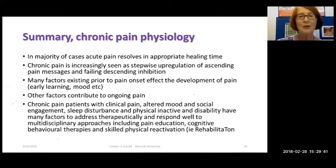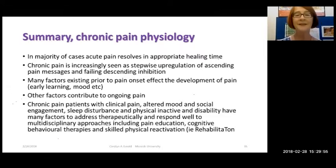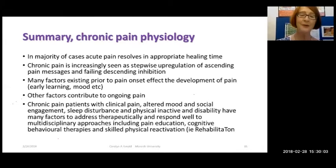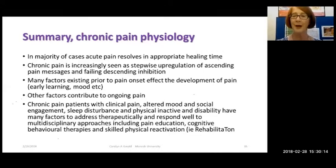In summary: in most cases, pain resolves. Chronic pain is a stepwise upregulation, and many factors are in place even before an injury that influence the development of chronic pain, with others developing in the course of the impact of an injury. Mood, social engagement — these are really our template for a rehabilitation model. When you finish these lectures on chronic pain, you'll realise we're very strongly married to a rehabilitation model — looking at adaptation to disability, challenging beliefs, stretching, and many different things.